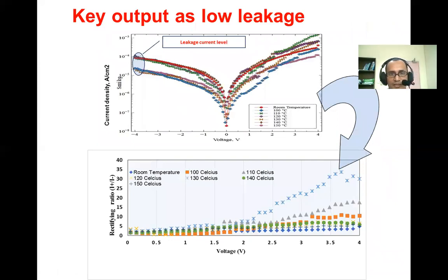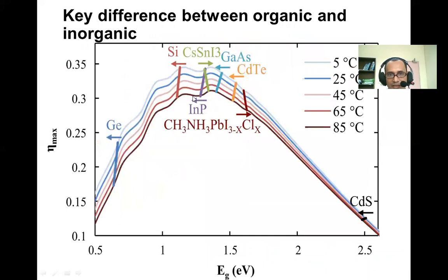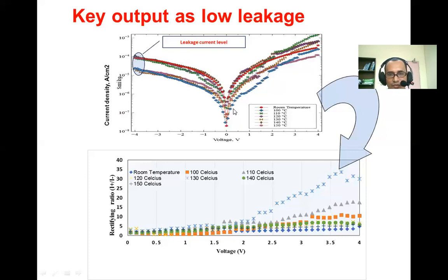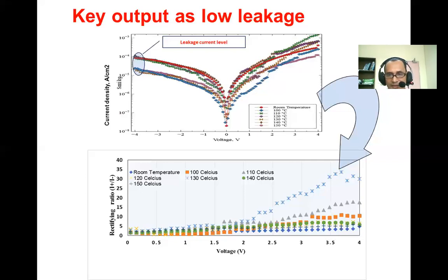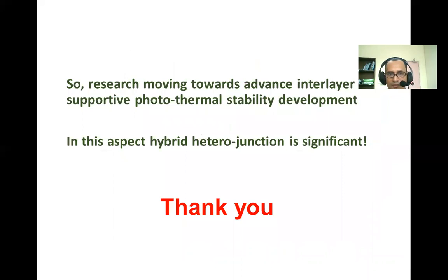You can see that the leakage current is minimized from approximately 10⁻⁵ A/cm² down to 10⁻⁴ A/cm² as the minimum level for a particular temperature range. For organic-inorganic materials, the temperature sensitivity of the inorganic component is greatest compared to organic materials. This makes organic materials very useful as the emitter for inorganic materials to advance solar cell development at low processing cost. The rectifying ratio is also promoted at higher fields, meaning the breakdown voltage is high due to the higher band gap, and this can be utilized for detection purposes as well, increasing the rectifying ratio with higher field sensitivity. The overall research direction is moving toward advanced interlayer photo-thermal stability development.